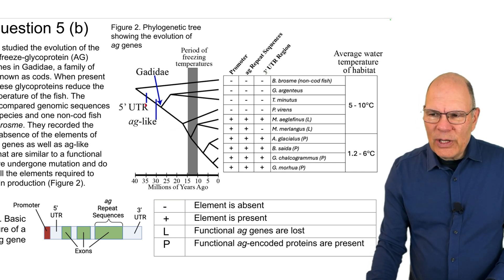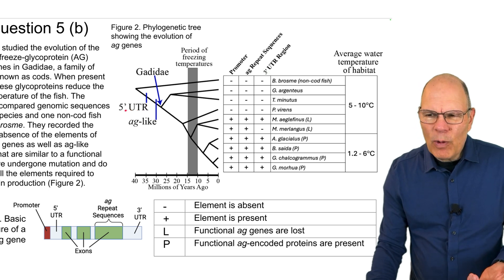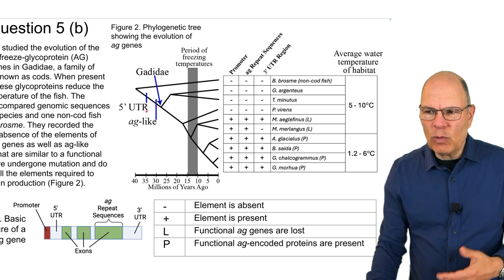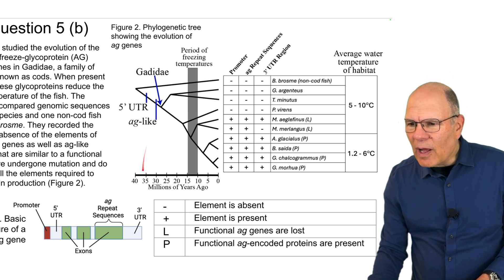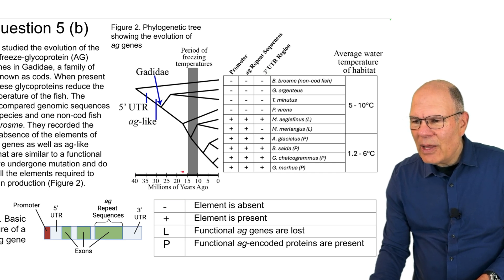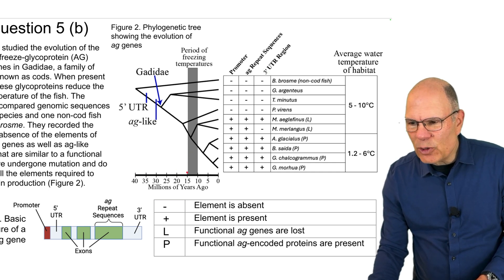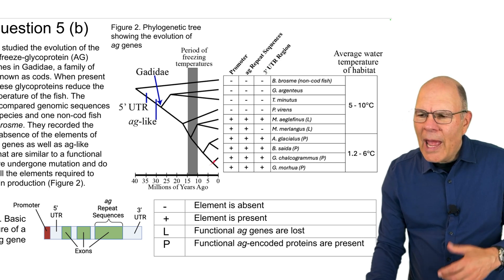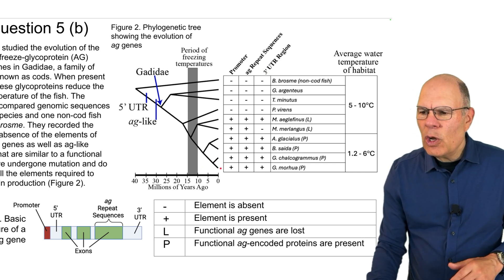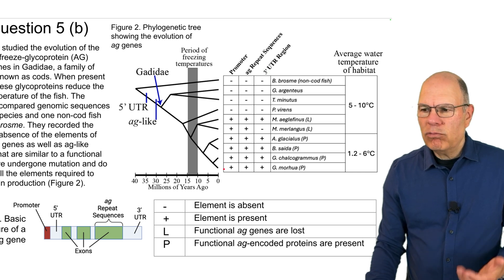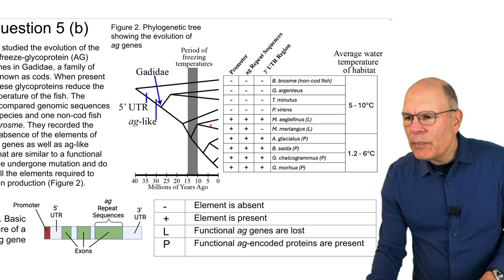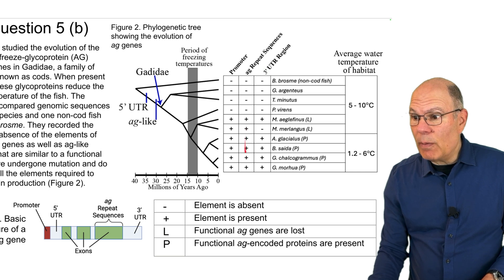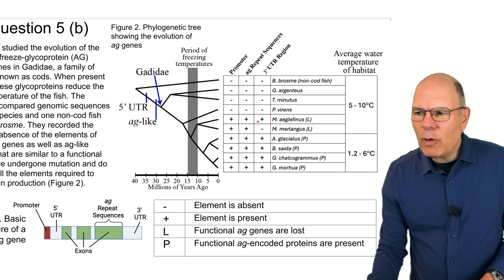Here we have the phylogenetic tree. This slash mark indicates in time when the five prime untranslated region was supposed to have evolved. This is showing when the AG-like repeat sequences were supposed to have evolved, and that is based on a timeline that's down here. There's a period of freezing temperatures between 10 and 15 million years ago, and then you can see how in each lineage whether certain elements of the gene are present or absent. So like, for example, a promoter is present in all six of these species, as is the AG repeat sequences, but not the three prime UTR region that's present here, but it's absent here.